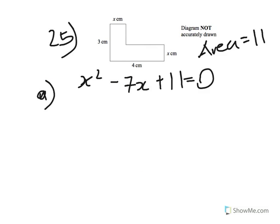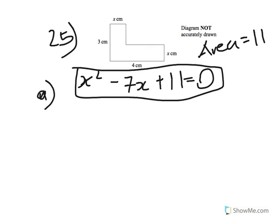For question 25, you're given this shape, and basically they're telling you the area of the shape is 11 centimeters squared, and you have to show that x squared minus 7x plus 11 is equal to 0. We have to decide what the area of the shape is. We can divide the shape into two separate rectangles: rectangle A and rectangle B.